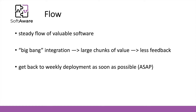A steady flow of valuable software is where you actually avoid the big bang integration, where you have large chunks of value released at once — and this only happens when you have less feedback. A big bang integration is when you stop delivering on a continuous basis to your customer, and the customer only has an opportunity to provide feedback when there is a large amount of features already implemented.